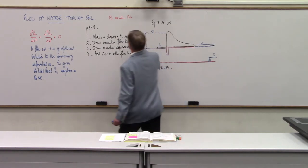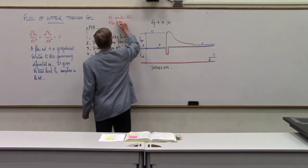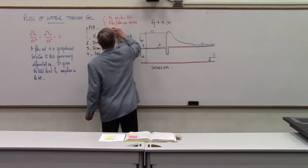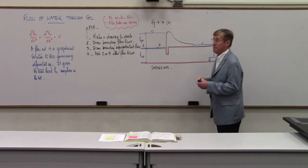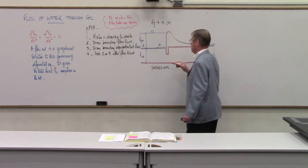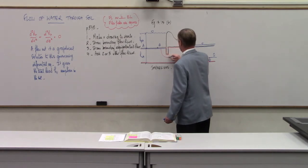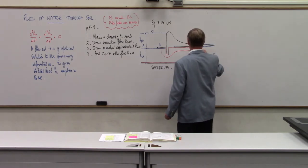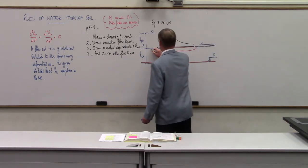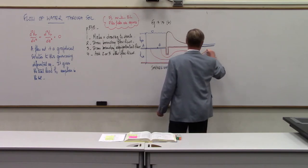Keeping those two properties in mind, add the interior flow lines. Any new flow line must start perpendicular to the upstream equipotential, follow the water molecule's path — squeezing under the cutoff wall — and emerge on the downstream side. Step five: complete the flow net by adding the interior equipotential lines.